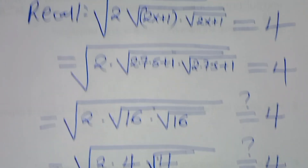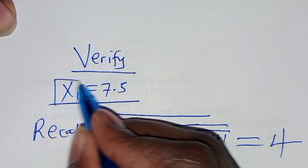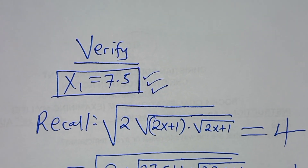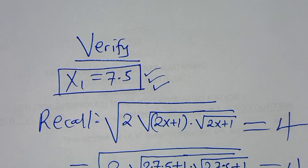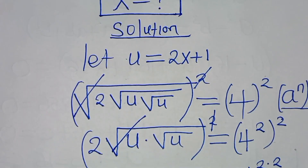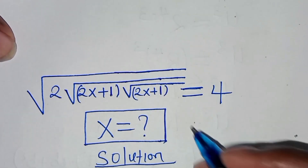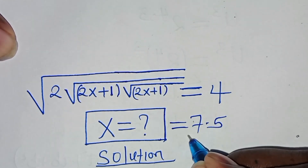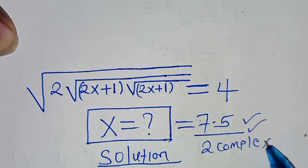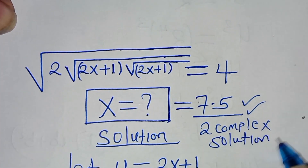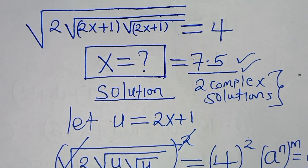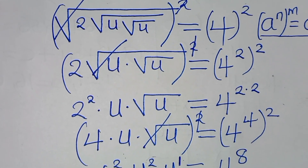This proves that x1, which is 7.5, satisfies the equation. This implies that we have three solutions to this algebra problem: two complex solutions and only one real solution. So x equals 7.5, and there are two other complex solutions — a total of three solutions. Please like this video and subscribe, see you in the next video.